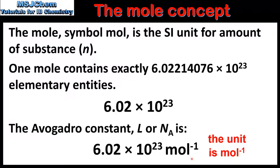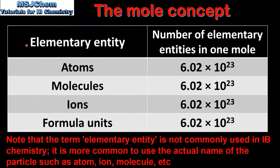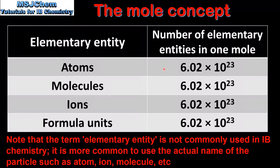Next we'll have a look at some examples of elementary entities. In this table we have examples of elementary entities. An elementary entity can be an atom, a molecule, an ion, or a formula unit. In the second column we have the number of elementary entities in 1 mole. So 1 mole of atoms contains 6.02 x 10 to the 23 atoms; 1 mole of molecules contains 6.02 x 10 to the 23 molecules; 1 mole of ions contains 6.02 x 10 to the 23 ions; and 1 mole of formula units contains 6.02 x 10 to the 23 formula units. So from this table we can see that one mole of substance always contains the same number of particles, which is 6.02 x 10 to the 23.